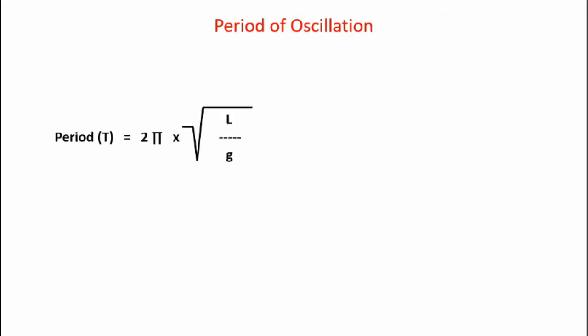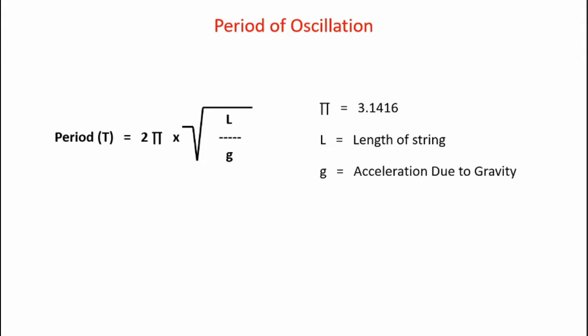Now let's look at the equation for the period of oscillation — the time to make one complete swing. The period T in seconds equals 2π times the square root of l over g, where pi is 3.1416, l is the pendulum string length, and g is acceleration due to gravity. Notice there's no mass in this equation, meaning the period is independent of the mass of the pendulum bob. The angle of release also doesn't appear, so a pendulum released at 30 degrees has the same period as one released at 45 degrees.